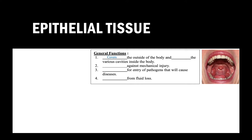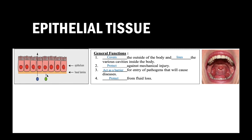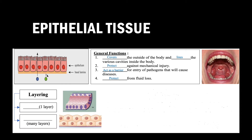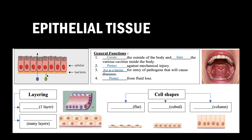Next, the epithelial tissue. The epithelial tissue covers the outside of the body and lines various cavities inside the body, such as the oral cavity. It protects the body against mechanical injury, acts as a barrier against pathogens, and also protects the body from fluid loss. All epithelial tissue sits on top of a membrane called the basal lamina or basement membrane. When describing a particular epithelial tissue, you first mention how many layers of cells the tissue has, followed by the shape of the cells.